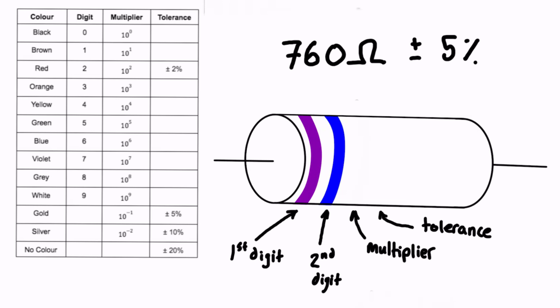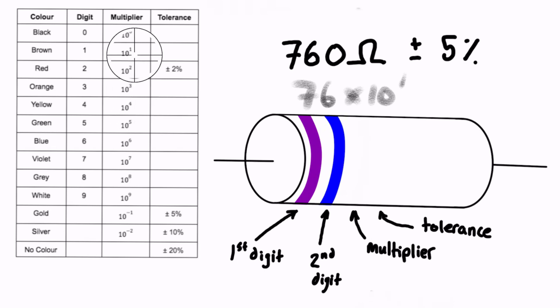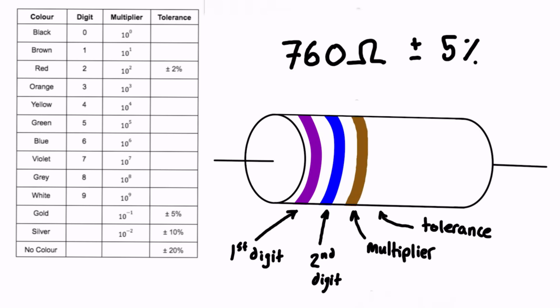For the multiplier we just have to think about this for a second. We know our actual resistance is 760 ohms and our first two digits are 76. So what do you have to multiply 76 by to get 760? It's going to be times 10, or times 10 to the 1. So our multiplier — when we look for times 10 to the 1 in the table — is brown, and we can drop that in for our third color band.